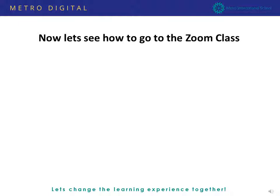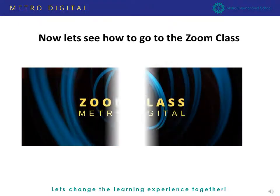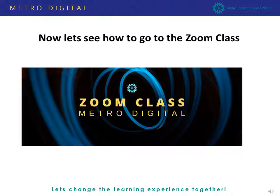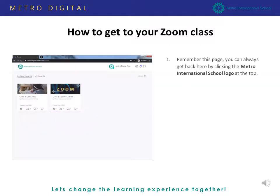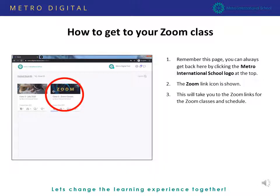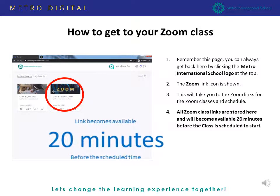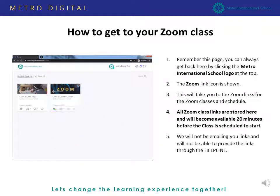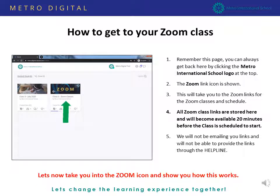When we talk about digital, everyone asks: where is the Zoom class and how do we get to it? Here you will get instructions on how to access the Zoom class. All links are in your class schedule on the Metro Digital platform. On the main screen, you will see two icons — one for digital content and one for Zoom. Click on the Zoom icon and it will take you to the Zoom schedule and Zoom classes. Click the link and it will take you to the Zoom class. Please remember that you don't need to email for the link.